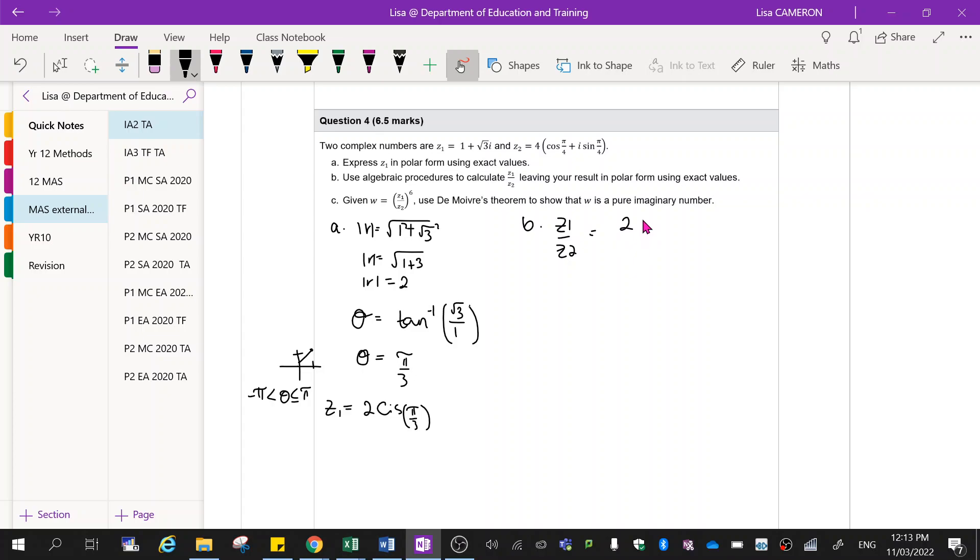So we're going to take our answer from the past question and we're going to put it over the top of 4. Now I'm going to convert this one to polar form too. So that'll just become cis pi on 4.